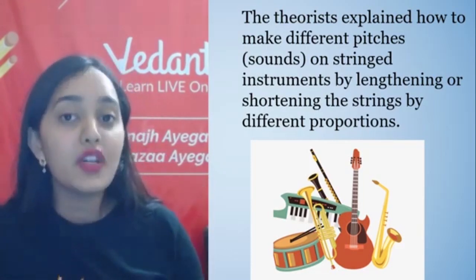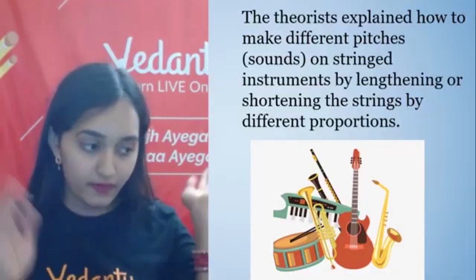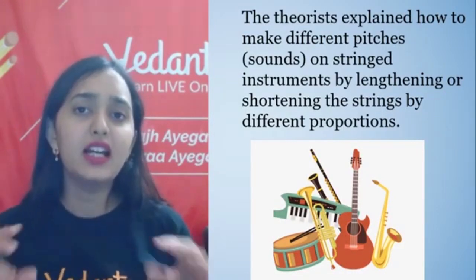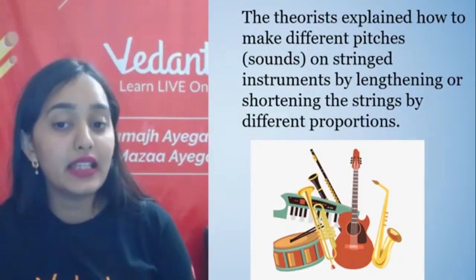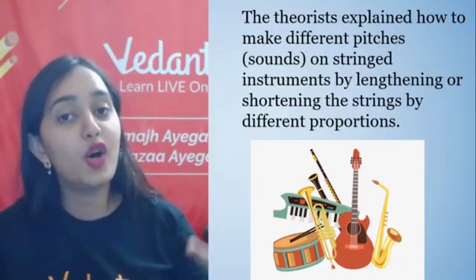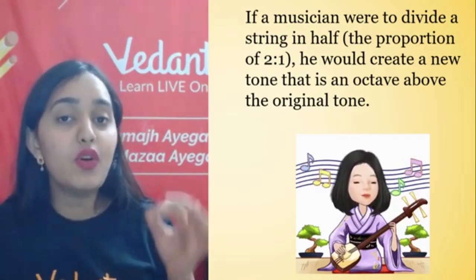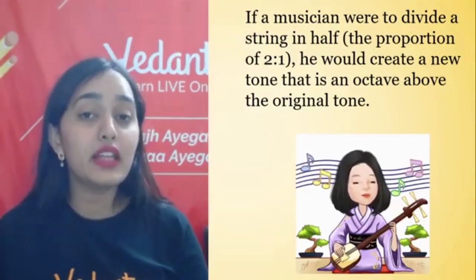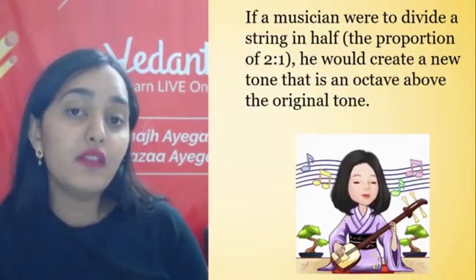The pitch of sounds that we create on stringed instruments — like guitar, sitar, and other string instruments — we can determine how the pitch will be produced. And that tells us the ratios, and the ratios come from math. So the musician, if you divide your string and the ratio of string 2 is to 1, he can create a new tone which will be an octave above the original tone.